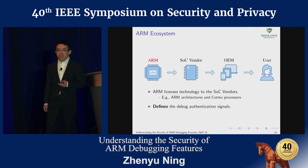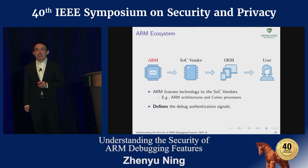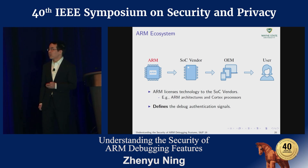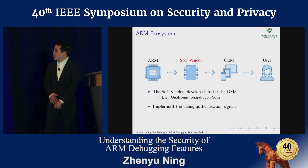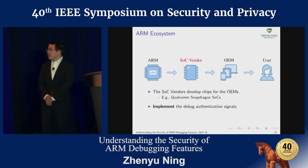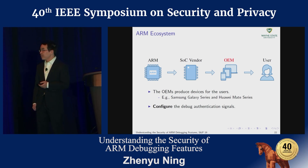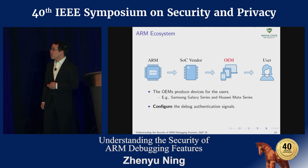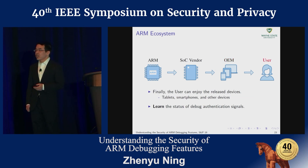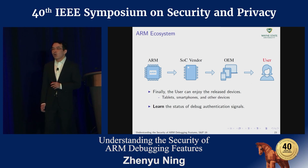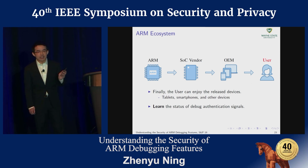In the ARM ecosystem, there are four different roles: ARM, SOC Vendor, OEM (original equipment manufacturers), and end user. ARM licenses the technology to the SOC Vendor, designing the debug authentication signal without specifying implementation details. The SOC Vendor develops chips for OEMs, implements the debug authentication signals, and manages them. The OEM gets SOC chips from the vendor, produces devices for users, and is responsible for configuring the debug authentication signals. The end user can only learn the status of the debug authentication signals.